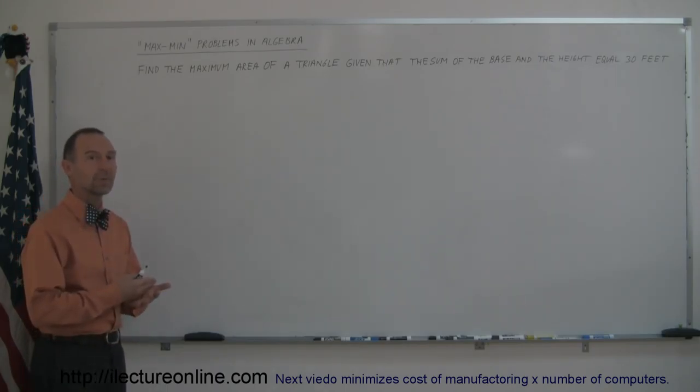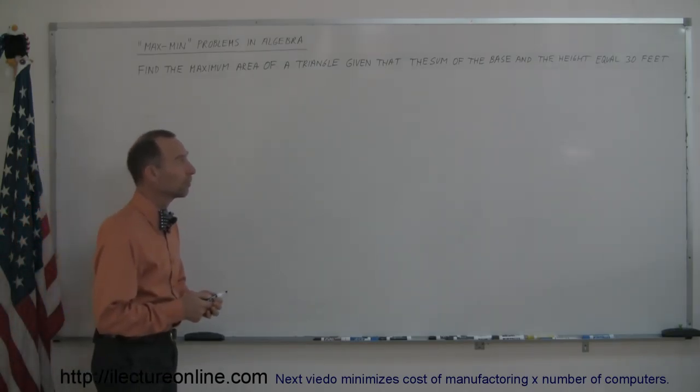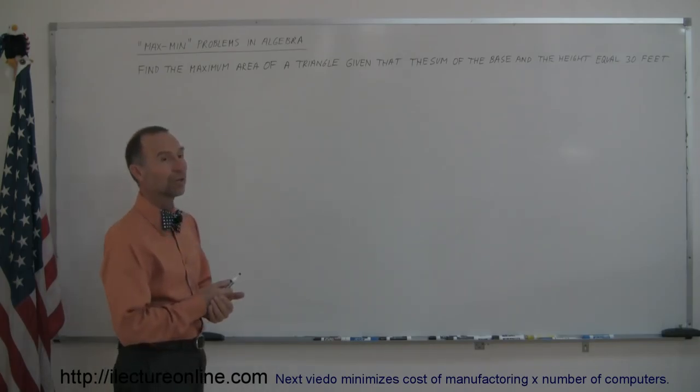Max/min stands for maximum and minimum, and typically they give you a scenario where you're trying to find the maximum of something or the minimum of something. In this case, it says find the maximum area of a triangle given that the sum of the base and the height equal 30 feet.